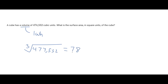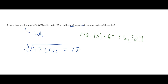So 78 is just the side length of each of the sides. Now we want to calculate the surface area. For the surface area, we can find the area of each side and then multiply by the number of sides. So we have 78 times 78, which gives us the area of one side. We know there are six faces to a cube, so we multiply by six, giving us a final value of 336,504. And that is our final answer.